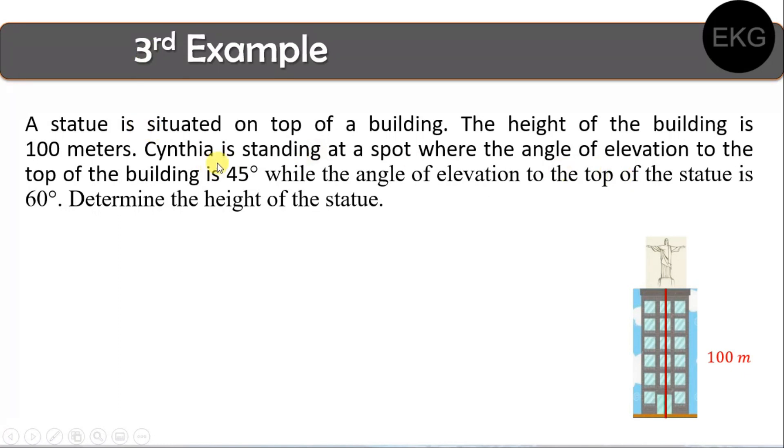Now, Cynthia, so yung character natin na pinangalanan, is standing at a spot where the angle of elevation to the top of the building is 45 degrees. So andito daw si Cynthia sa spot na to, wherein the angle of elevation to the top of the building, so dito na, the spot, is 45 degrees. While the angle of elevation to the top of the statue, so same spot, pero ngayon nakatingin siya dito sa top of the statue, the angle of elevation is 60 degrees. Now, determine the height of the statue. Gaano daw ka haba itong statue na to, or kataas itong statue na to. Okay, so that's our problem.